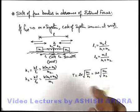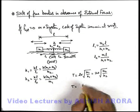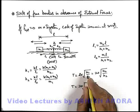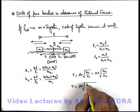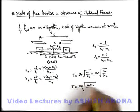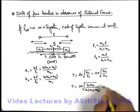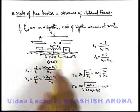You can substitute either k1 or k2. We'll get the value of time period of oscillation as T = 2π√(m1*m2/(k*(m1+m2))). That'll be the oscillation period of these two blocks.